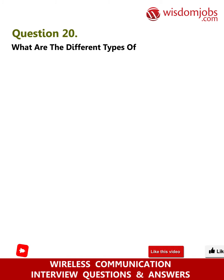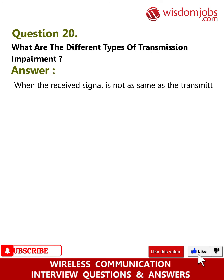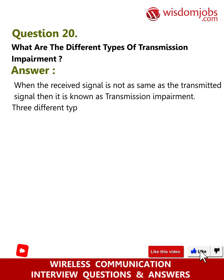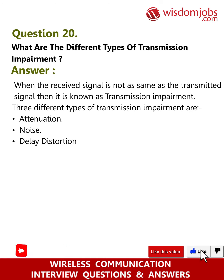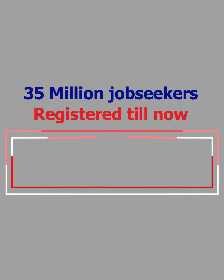Question 20: What are the different types of transmission impairment? Answer: When the received signal is not the same as the transmitted signal, it is known as transmission impairment. Three different types of transmission impairment are: attenuation, noise, and delay distortion.